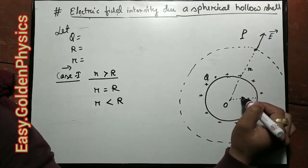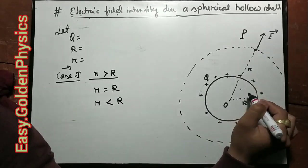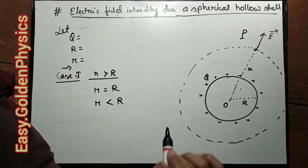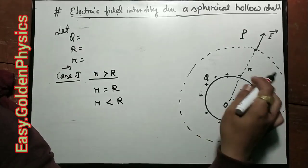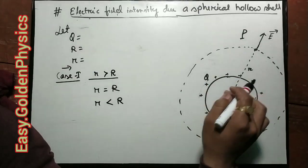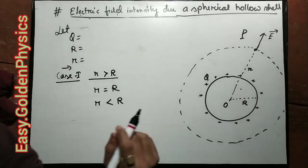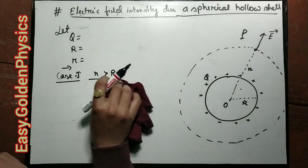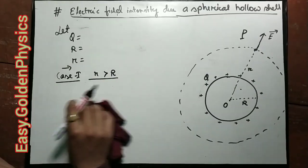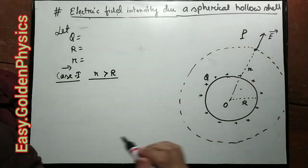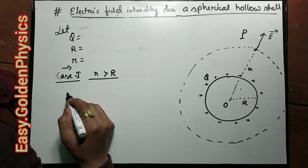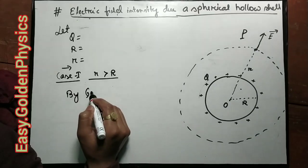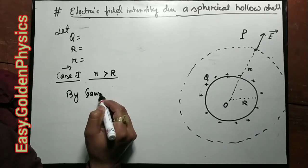Case 1 is here. The Gaussian surface section is drawn, and the electric flux goes through it.